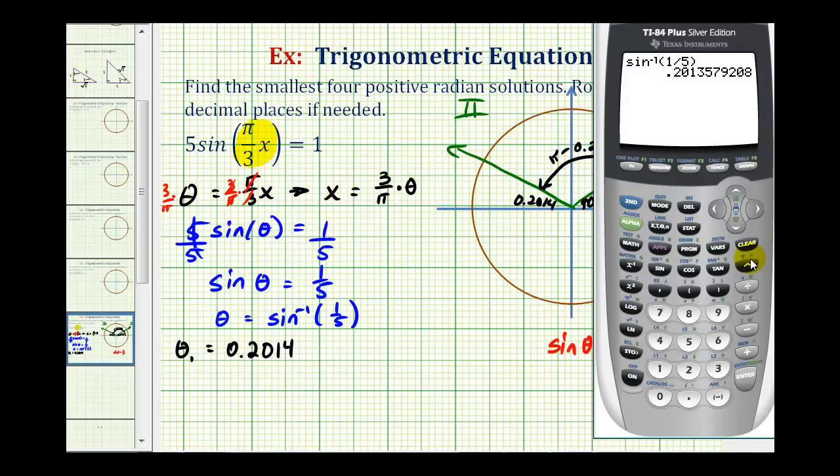We would have π radians minus 0.2014. So we'll call this θ₂. It'll be approximately 2.9402.